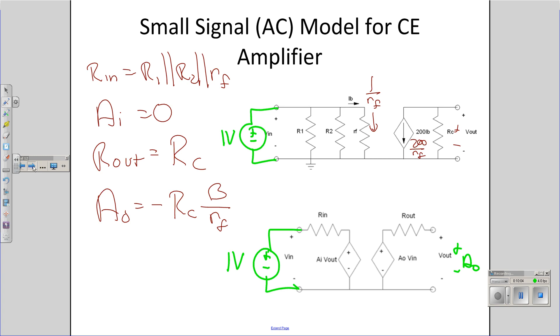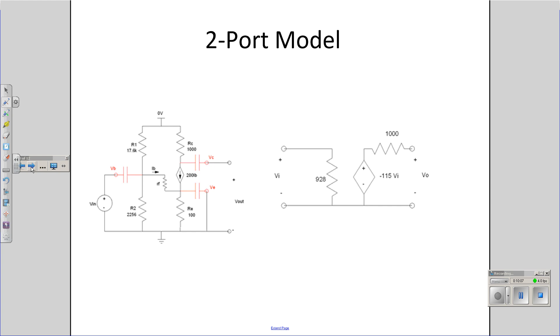If you plug in numbers, you get the following. AI was zero, so I didn't draw it. The input impedance was R1 in parallel with R2 in parallel with Rf. Gives you 928 ohms. Output impedance was RC. That's 1,000 ohms. And the gain is beta 200 times RC over Rf minus 115. Here's your two-port model for the common emitter amplifier that we designed. What's nice about the two-port model is the circuit on the right is way simpler than the circuit on the left. It's much easier to analyze. It tells you that this has a voltage gain of 115, input impedance of 928 ohms, output impedance of 1,000 ohms. That's what I would expect if I designed it or built it. Let's check.